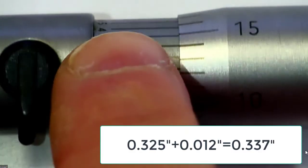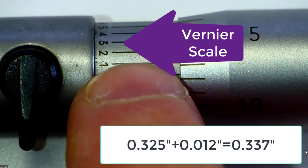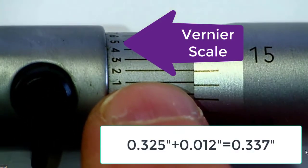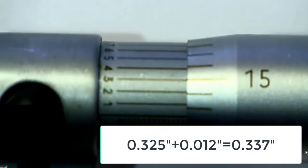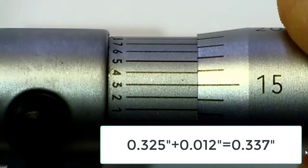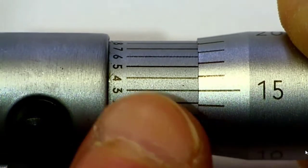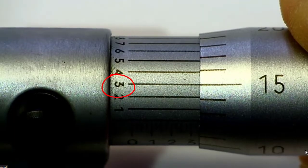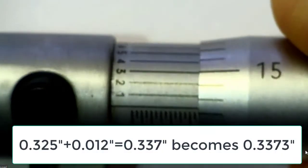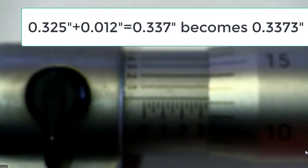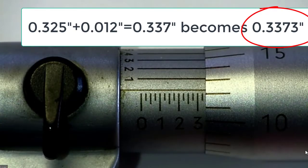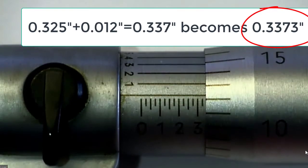And your last step, then, is to look up here on the vernier and find the number that lines up the best. And so, if we rotate that through, you can see that the three lines up really nicely. We'll hang that in the ten-thousandths place, and that means that this measurement that we see is .3373, and we're done.